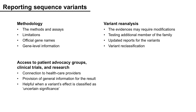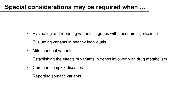Healthcare providers can provide general information on the result, support and treatment of the diseases, and this is especially helpful when a variant's effect is classified as uncertain significance. You might also need to reanalyze the variants when the evidence may require modifications, when there is testing of an additional family member, or when there are updated reports for the variants, which can result in variant reclassification. Some special considerations may be required for: evaluating and reporting variants in genes with uncertain significance, evaluating variants in healthy individuals, interpretation of mitochondrial variants, establishing the effects of variants in genes involved with drug metabolism, common complex diseases, and reporting somatic variants.